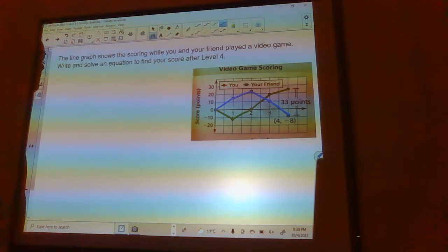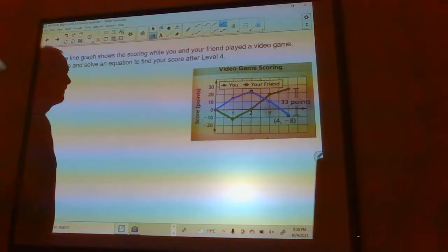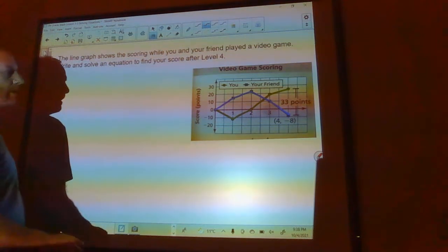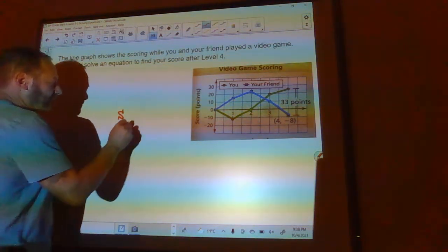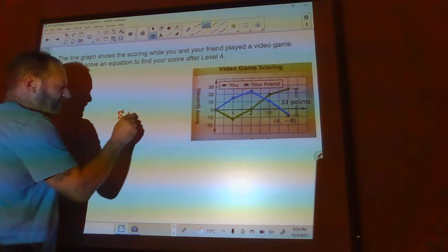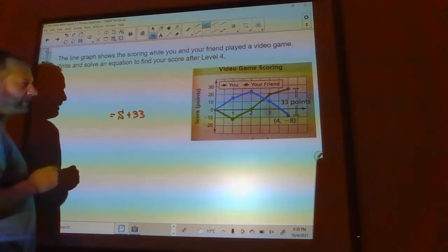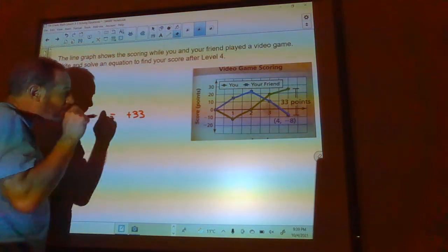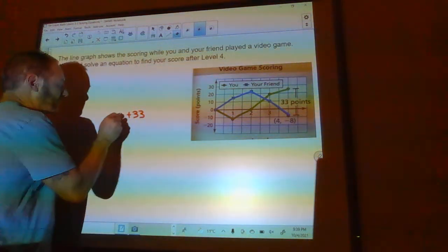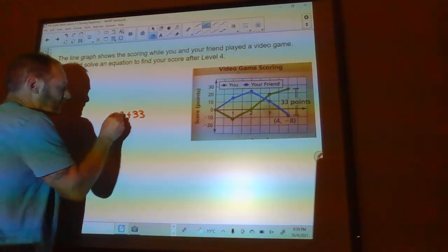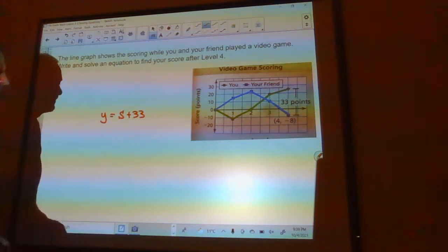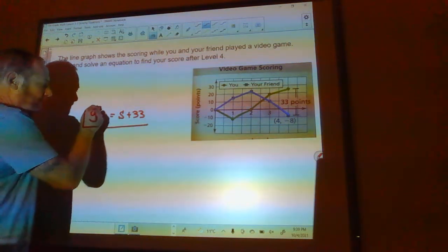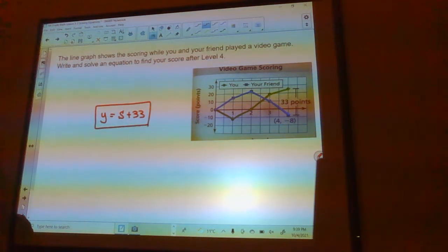Write and solve an equation to find your score after level 4. So you're going to take your friend's score, which is S, and I'm going to add to that 33 points, and that's going to equal your score. Actually, you know what? Let's not use S. This would be, yeah, we can use S. So your score equals your friend's score plus 33.